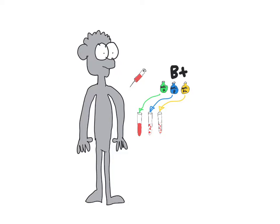Based off of that, what antibodies do you think they would have in their bloodstream? Yes, they would have anti-A. They would not ever produce anti-B or anti-RH. Based off of that, what types of blood could we give this patient? Yes, we can give an exact match, B positive. But we can also give O positive, because that does not have the A antigen. We could also give B negative and O negative, because those do not contain the A antigen either.